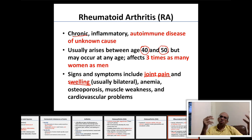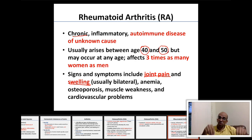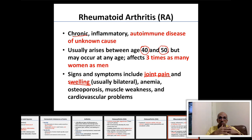It occurs bilaterally because what causes the disease — immunoglobulins and antibodies released by the immune system — circulates in the blood and reaches both sides of the body equally, causing bilateral joint inflammation.